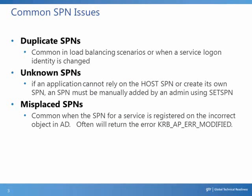The three most common SPN issues are duplicate SPNs, unknown SPNs, or misplaced SPNs. Duplicate SPN issues are more common when an application or service has been migrated to a new computer and the application dynamically registers its own SPNs. Unknown SPNs are more likely to occur when someone is setting up an application to run. This is less likely with built-in services like CIFS, since Windows computers register their default SPNs automatically.